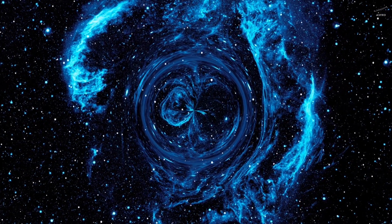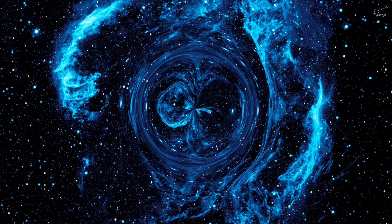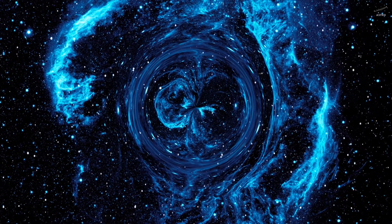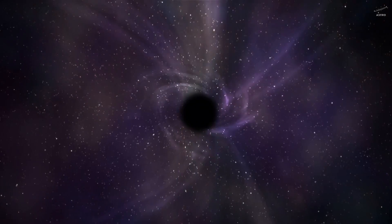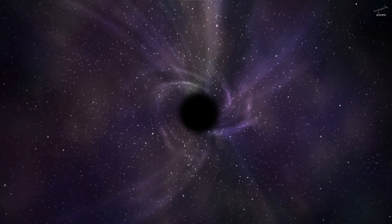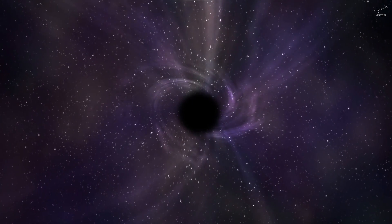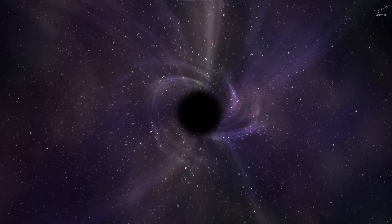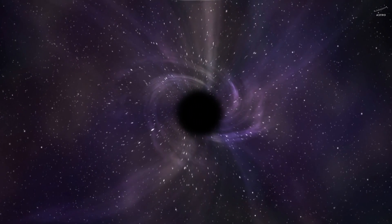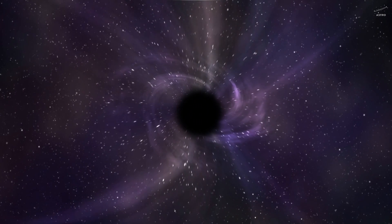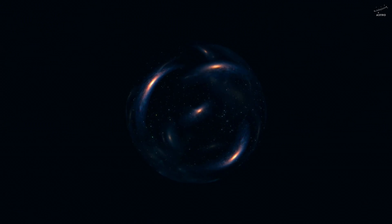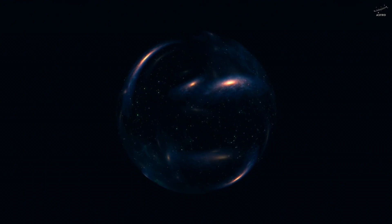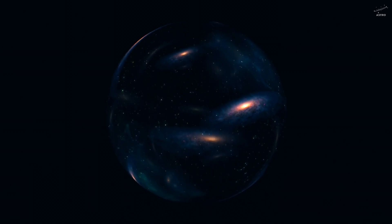A prime example of this is Quasar 3C273, one of the brightest known quasars, located 2.4 billion light years away. But if quasars are indeed responsible for these cosmic rays, why don't we see a clear directional pattern in their arrival on Earth? Why do they appear to come from seemingly random points in the sky? Could there be another explanation?